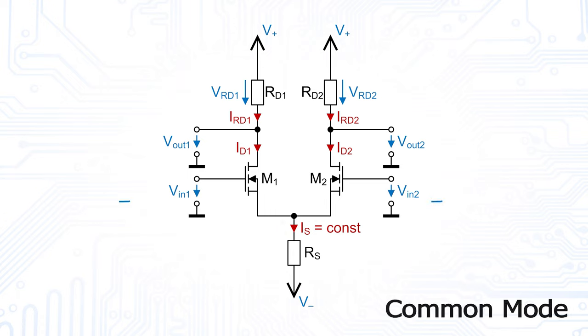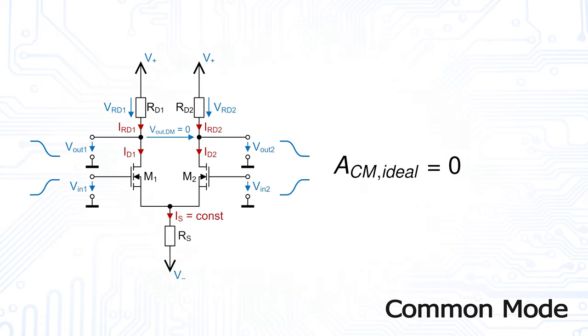Let's first apply the same voltage, which we call common mode voltage, to both inputs. Now all currents and voltages in the circuit are symmetrical. As a result, also the output voltages have the same size, which leads to an output voltage difference of zero volts. In this case the so-called common mode gain is zero. Remember that this is part of the ideal behavior of a differential amplifier, as it should only amplify an input voltage difference.